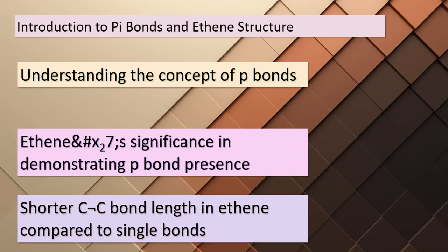Today we're delving into pi bonds and the structure of ethene. Pi bonds might not be directly observable, but we have solid evidence for their existence. The C–C bond length in ethene is significantly shorter than in compounds with single C–C bonds — just 134 picometers — a clear indicator of a stronger C=C double bond. Moving on to our second point, all six atoms in the ethene molecule lie in the same plane. This arrangement is crucial because the p orbitals on each carbon atom, responsible for forming the pi bond, can only achieve optimal overlap when the two CH₂ fragments lie in the same plane. Pi bonds introduce rigidity into molecules due to their requirement for planar portions.